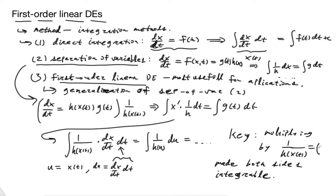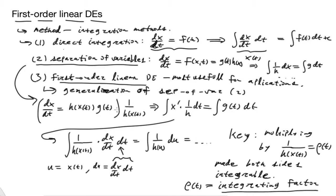We have a name for this. We're going to call this ρ(t), and we call this factor the integrating factor. We're going to see how we can generalize this process from separation of variables and develop other integrating factors that will solve an even more general set of problems — the idea is to find this factor, multiply both sides by it, and get something we can integrate.